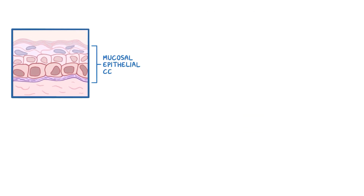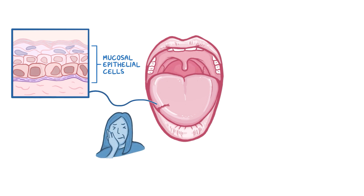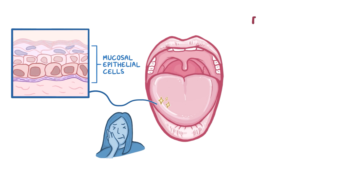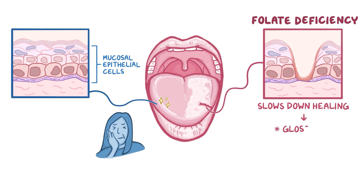Other rapidly dividing cells are mucosal epithelial cells, especially those of the tongue mucosa. Old epithelial cells are replaced with new ones very quickly. In folate deficiency, old epithelial cells aren't replaced, and this slows down the healing of normal wear and tear of the tongue, which ultimately leads to inflammation of the tongue, known as glossitis.